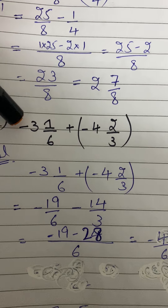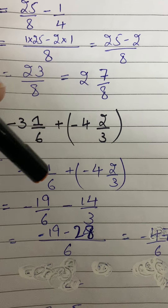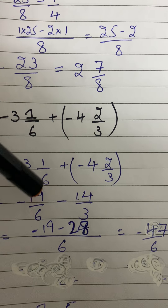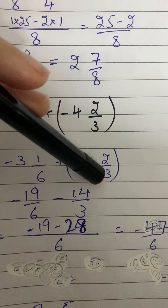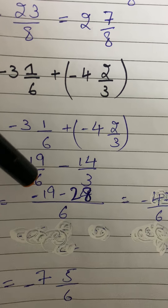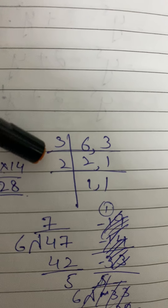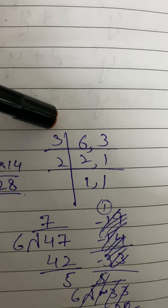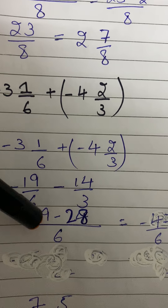Now part d: minus 3 whole 1 over 6 plus minus 4 whole 2 over 3. Convert the mixed numbers: 6 threes are 18, plus 1 is 19 — so 19 over 6. Then 4 threes are 12, plus 2 is 14 — so 14 over 3. The LCM of 6 and 3 is 6.